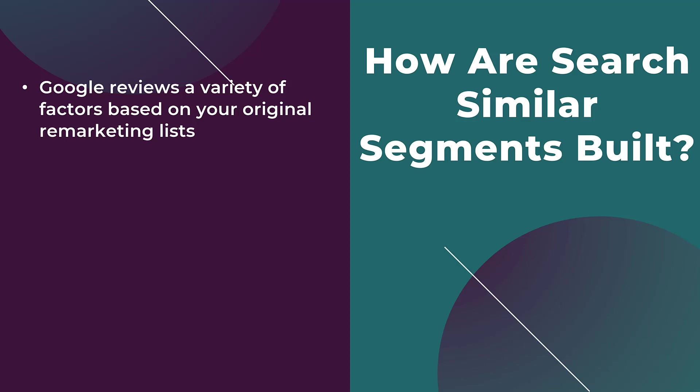Google also looks at how recently people joined your original remarketing list. If you're creating a similar segment off a customer list and you're not updating that customer match audience, it's actually not going to help your similar segments. Website visits and app activity lists automatically refresh, and as new people keep visiting, that helps feed the similar audience signal through machine learning. Google also pays attention to how similar the search behavior is between all these users. Having a stronger original remarketing list or root audience is going to make your similar audiences a lot stronger.